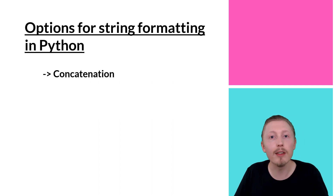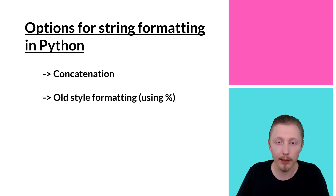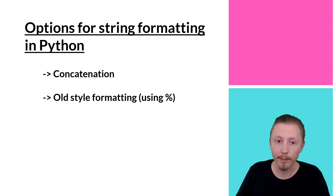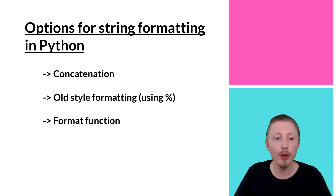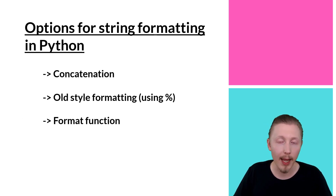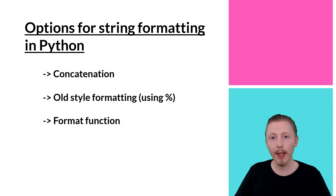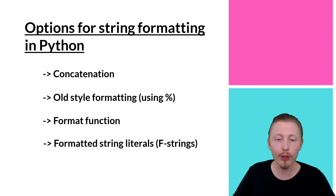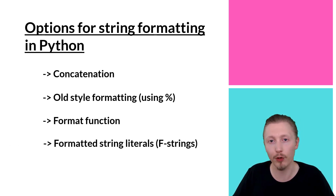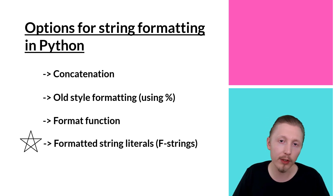The next is old style formatting — this is when you use the percent symbol to format a string. Then you have the format function, which is a new function added to Python 3 that allows you to format strings using the format function. Finally you have formatted string literals, also referred to as f-strings, and this is the newest, most modern, and fastest approach.